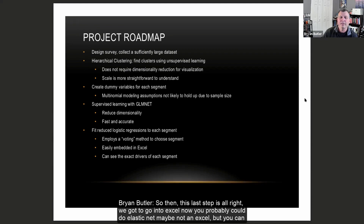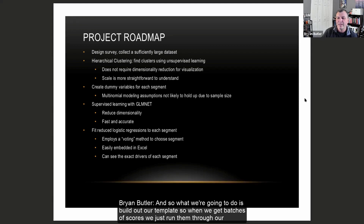The last step is going into Excel. You can easily do a logistic regression in Excel even if you can't do an Elastic Net. We build out our template so when we get batches of scores we just run them through the worksheet with logistic regression, and then it uses a voting method to choose which segment you're in.